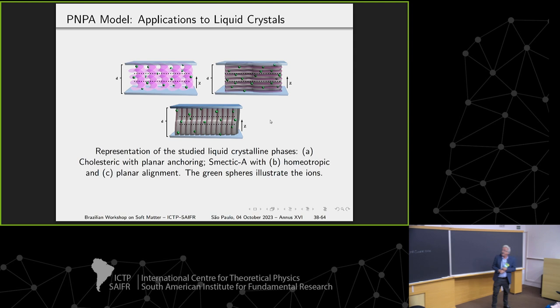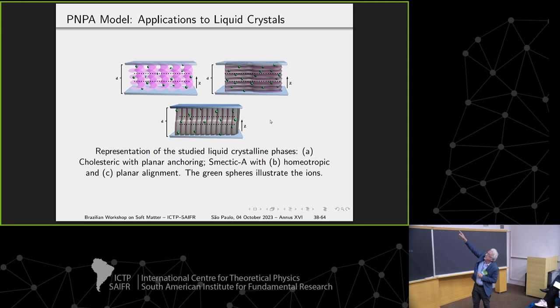In smectic phase shown in B and C, you have smectic homeotropic or planar anchoring, and you have layers. If the diffusion has to cross layers, it's one problem.